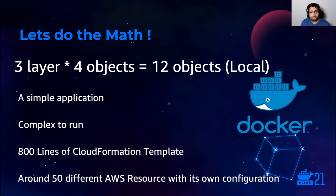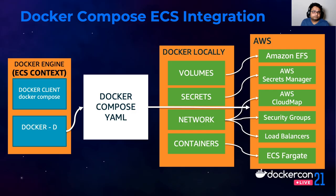However, if we had to take this application to AWS Cloud, it would require writing around 800 lines of CloudFormation templates with around 50 different AWS resources — which is not the Docker Compose file developers begin coding with and use locally. But now, with Docker Compose ECS integration, this problem can be solved pretty seamlessly. With the same Docker Compose files, you can now deploy the same application into Amazon ECS without any additional work.